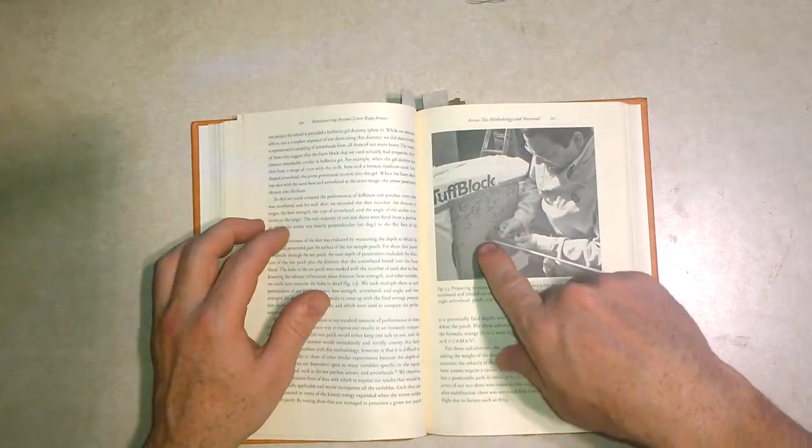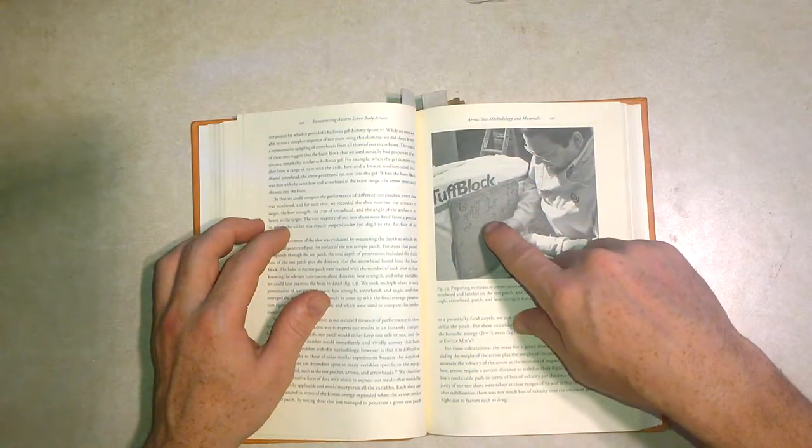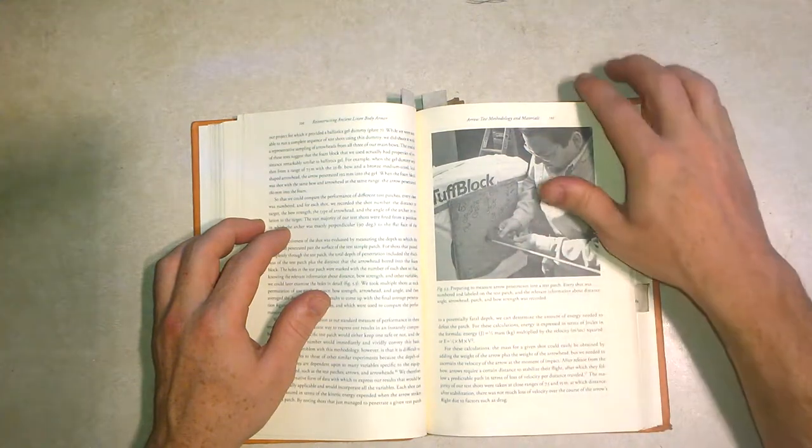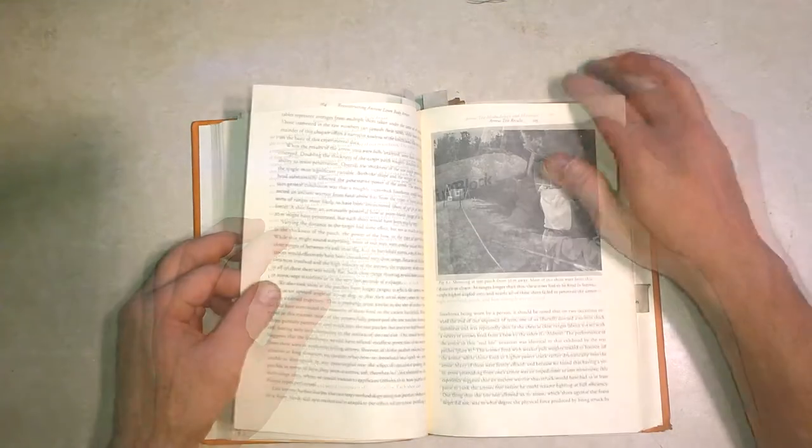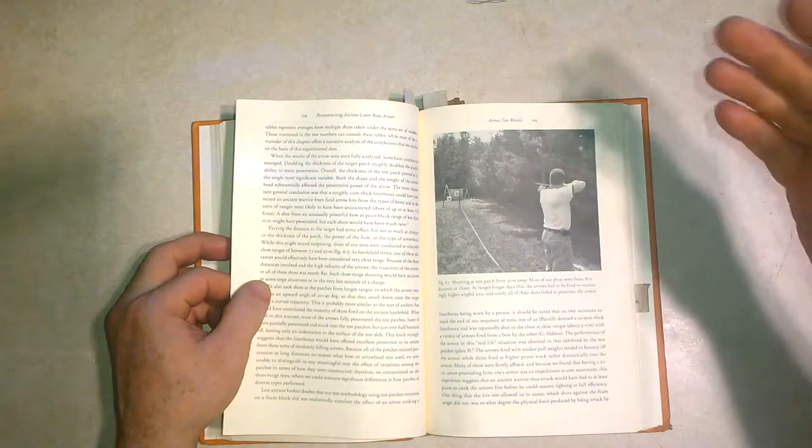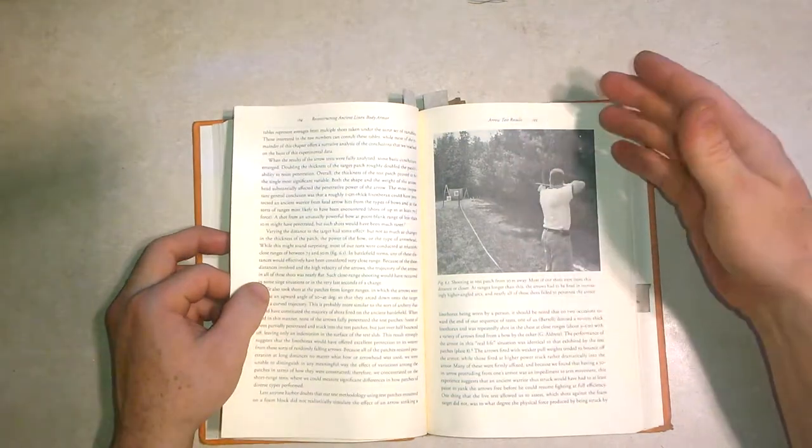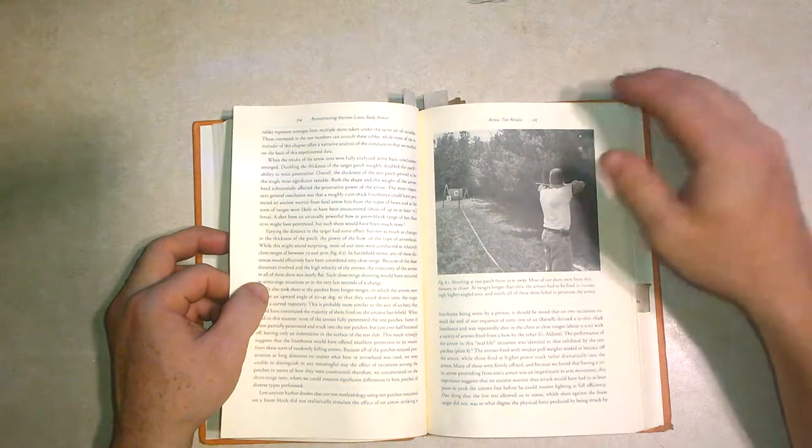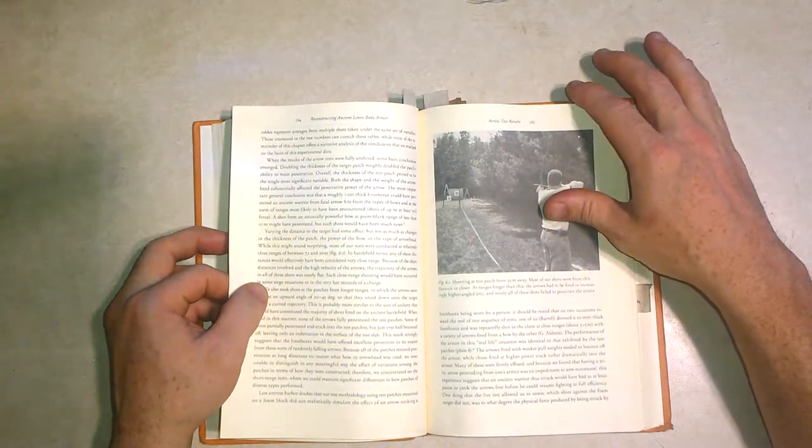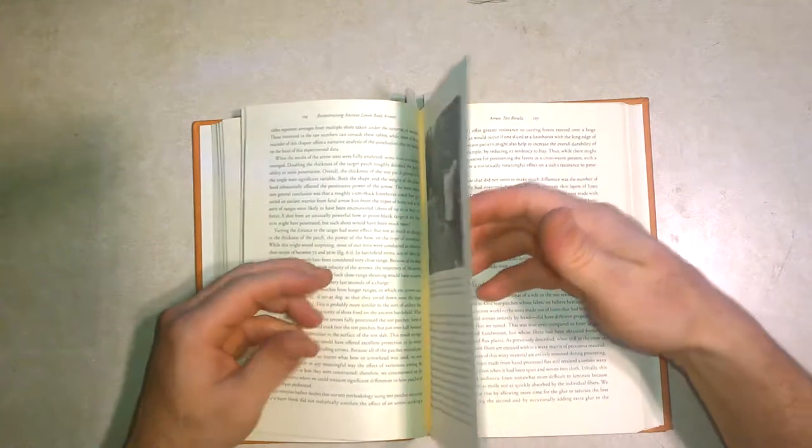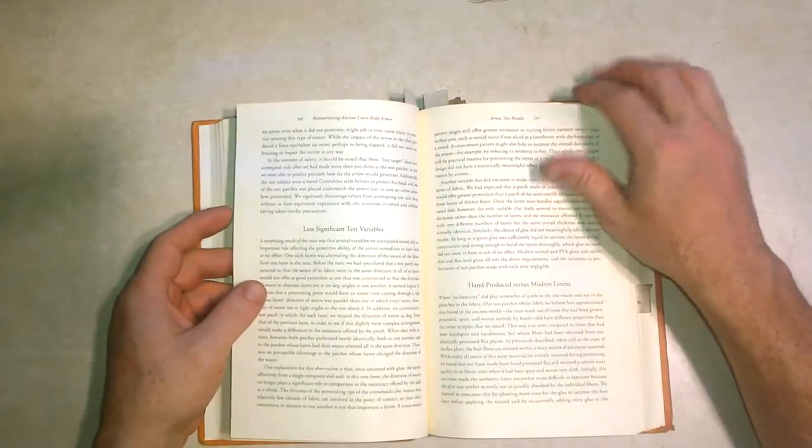They have a nice method of marking which holes did which depth which they go into. They talk about the distances they used, the different types of shots they used, the bows they used, which were modern bows in this case because they wanted to keep it within the realm of being able to quantify the draw weight.